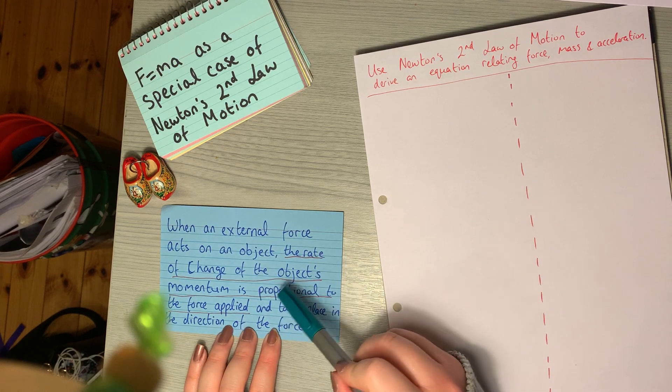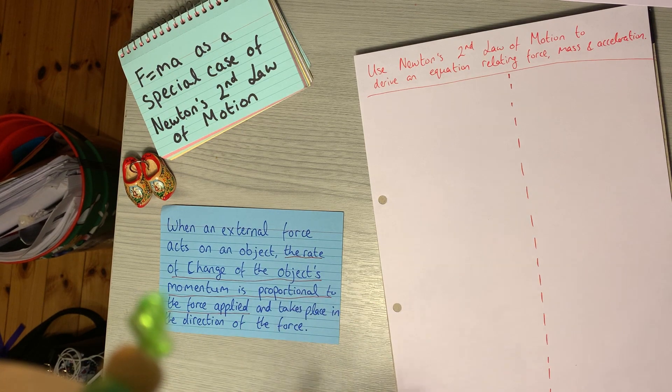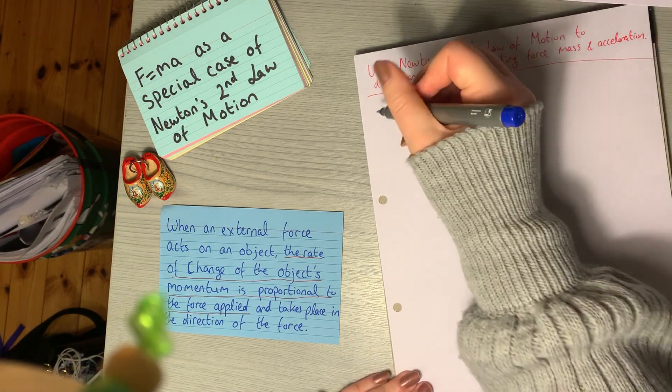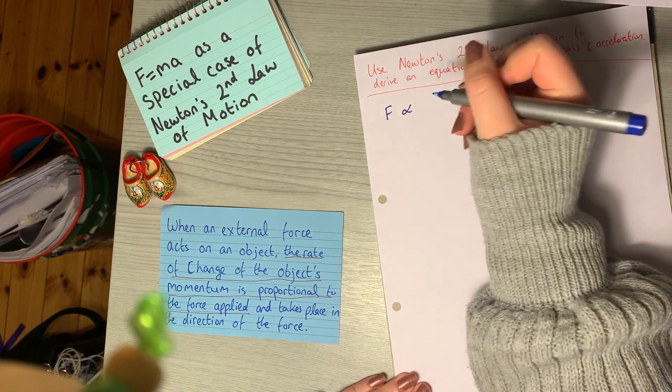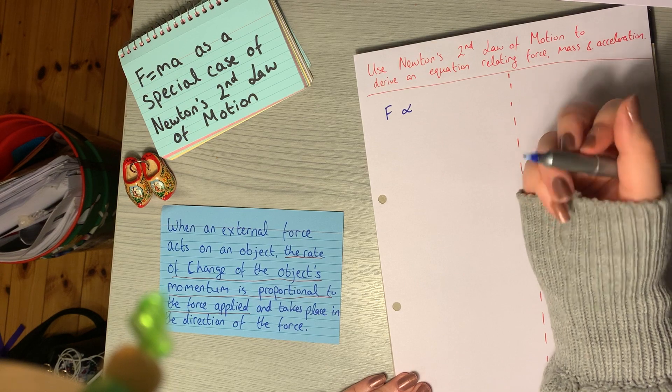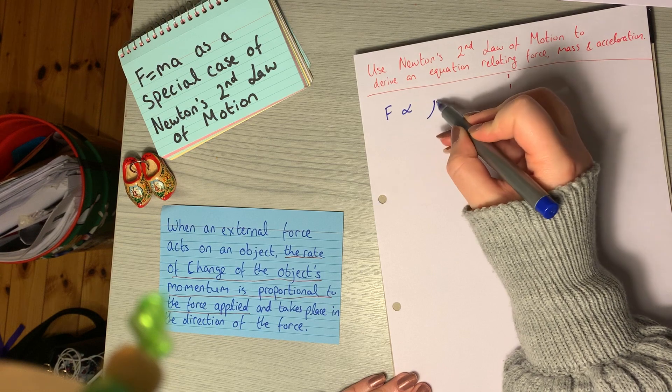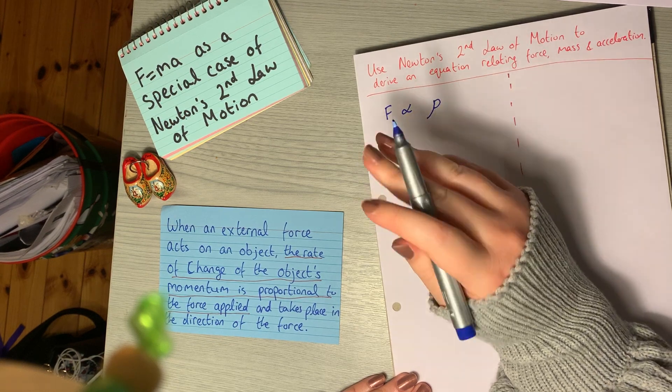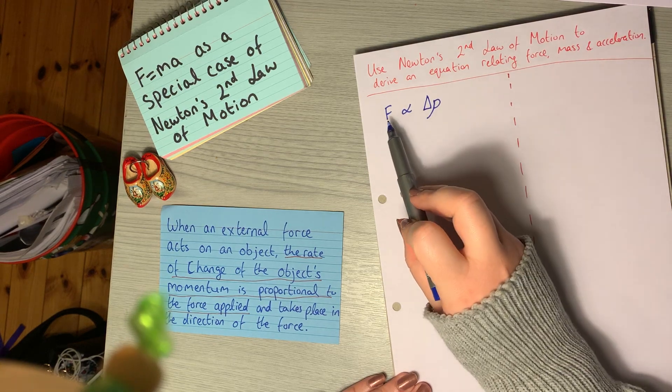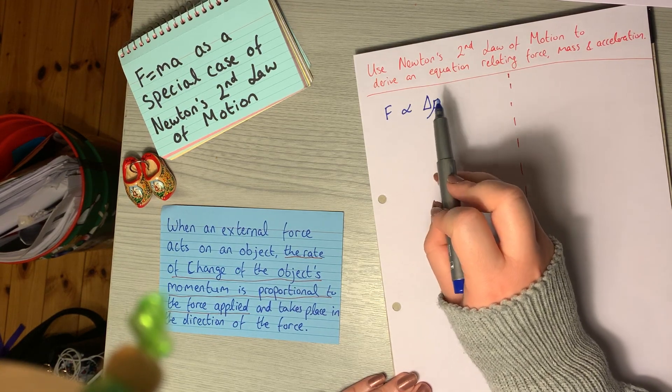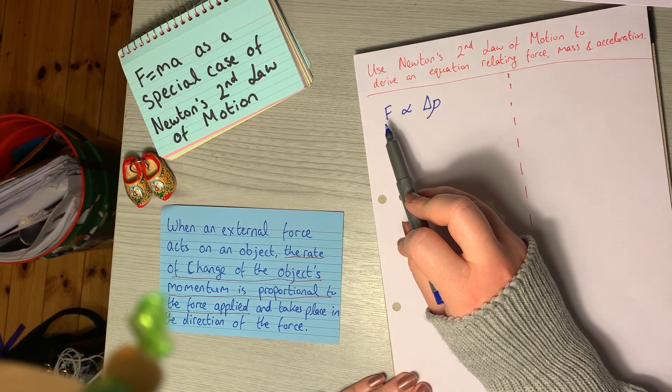The rate of change of the object's momentum is proportional to the force applied. We can write that as the force is proportional to the rate of change of momentum. Momentum is denoted by the Greek letter rho, but in this case it's the change of momentum, so we put a little delta sign in front of it. This is saying that the force applied is proportional to the change of momentum and likewise the change of momentum is proportional to the force applied.